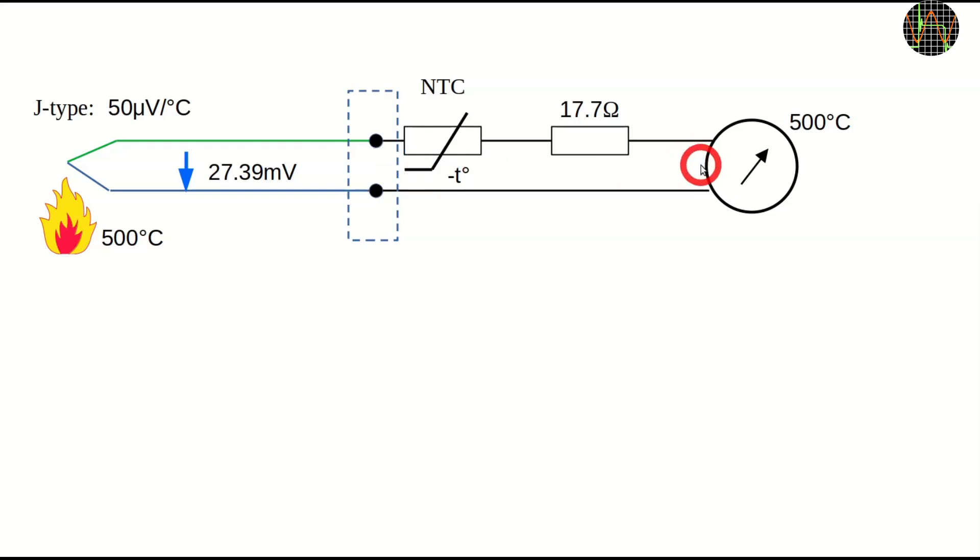But now, the NTC in series with the instrument lowers its resistance the warmer it gets, thus less voltage is dropped over the NTC and this raises the instrument readout. If done properly, the resistance dropped by the NTC compensates exactly for the increase in negative voltage at the cold junction at ambient temperature.